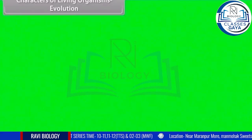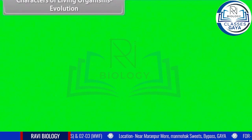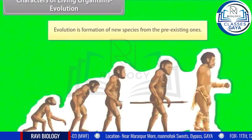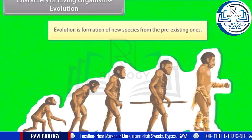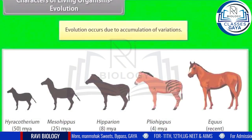Characters of living organisms — Evolution: evolution is the formation of new species from pre-existing ones. Evolution occurs due to the accumulation of variations.